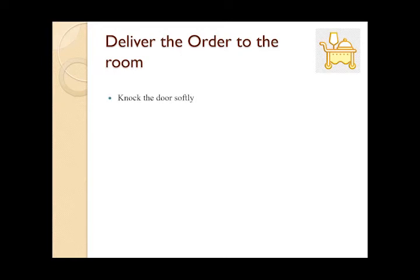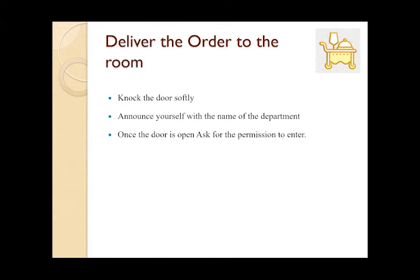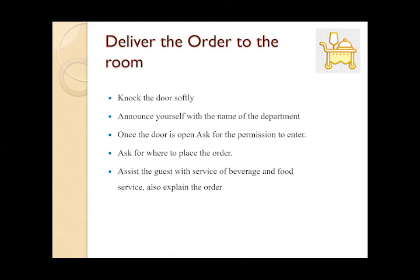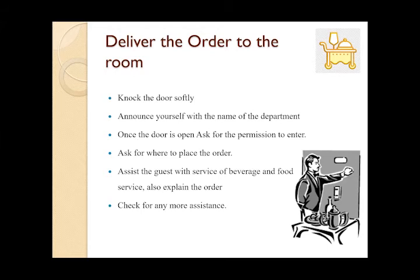While delivering the order, the room service waiter knocks the door softly, then announces his name and the name of the department. Once the door is opened, he asks for permission to enter and does not enter without the guest's permission. Once inside, he checks where the tray or trolley is to be placed by asking the guest. He then assists the guest with the service of food and beverage and explains the complete order with its accompaniments. He checks with the guest for any further assistance required.